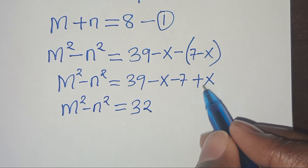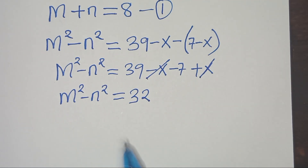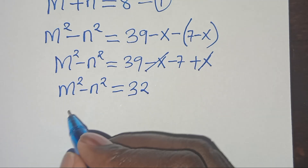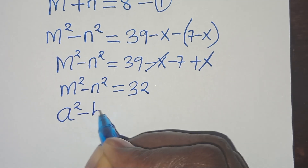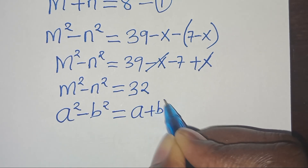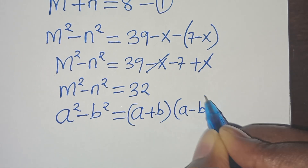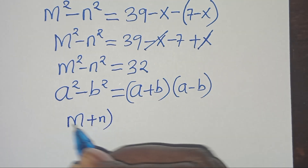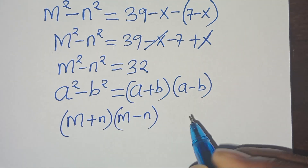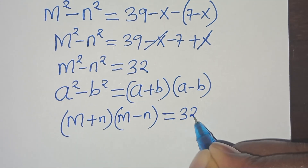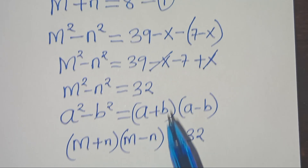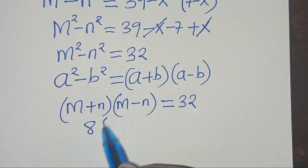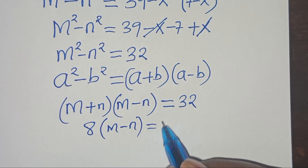So m squared minus n squared equals 32. This is a difference of two perfect squares, in the form a squared minus b squared, which we can express as (a plus b)(a minus b). Applying this identity, we get (m plus n)(m minus n) equals 32. From equation 1, m plus n equals 8, so substituting: 8 times (m minus n) equals 32.